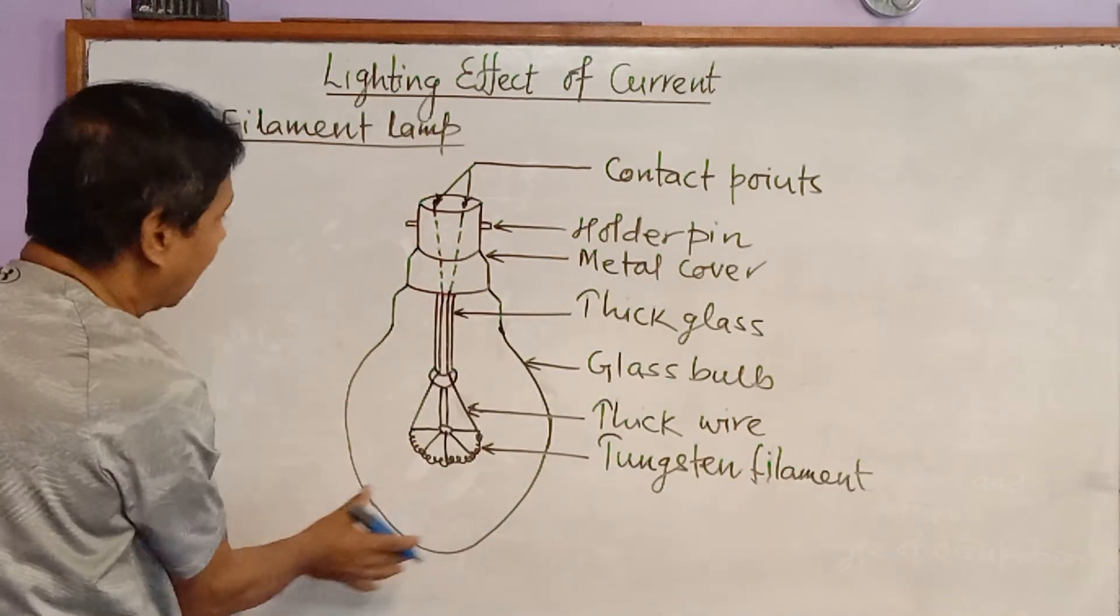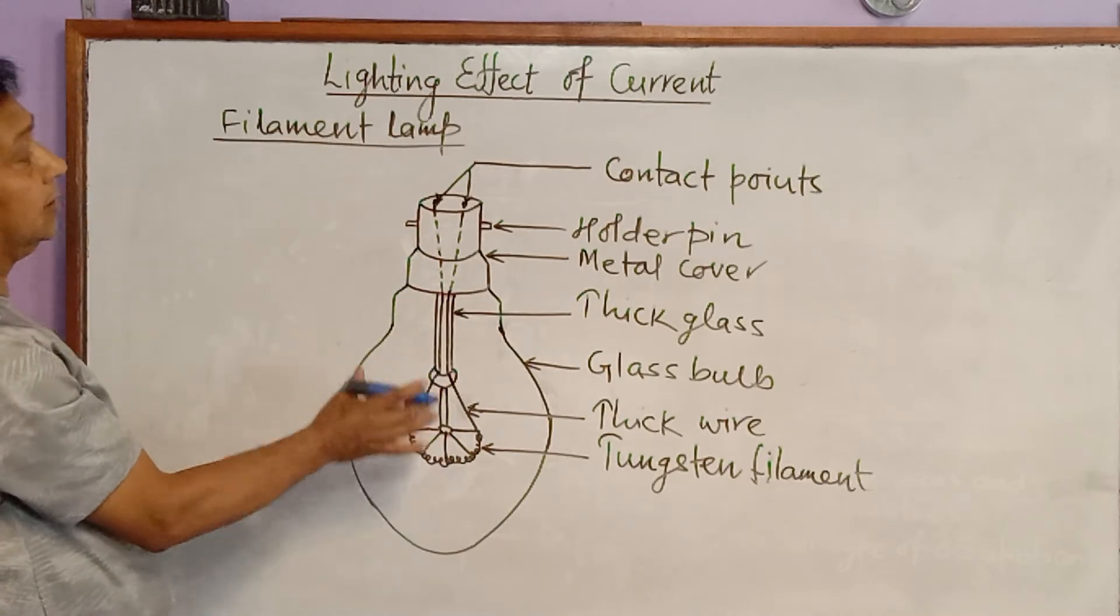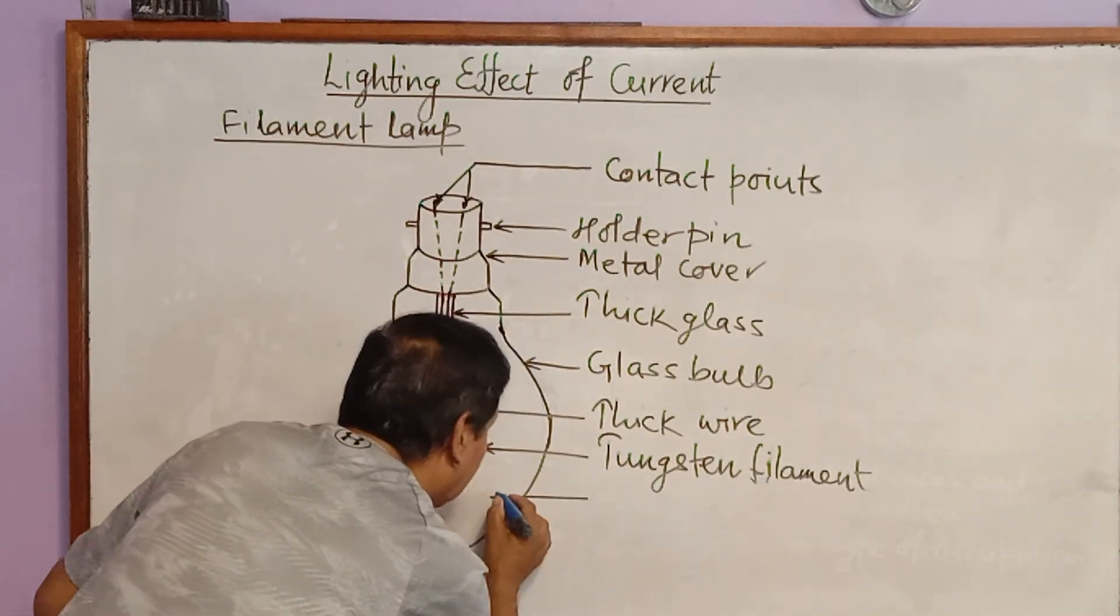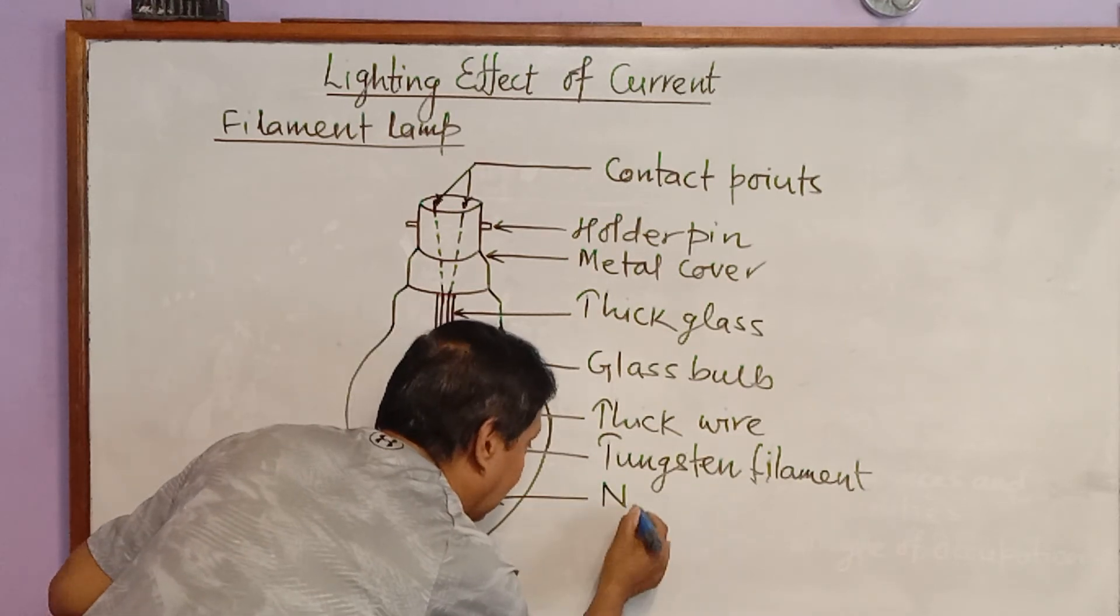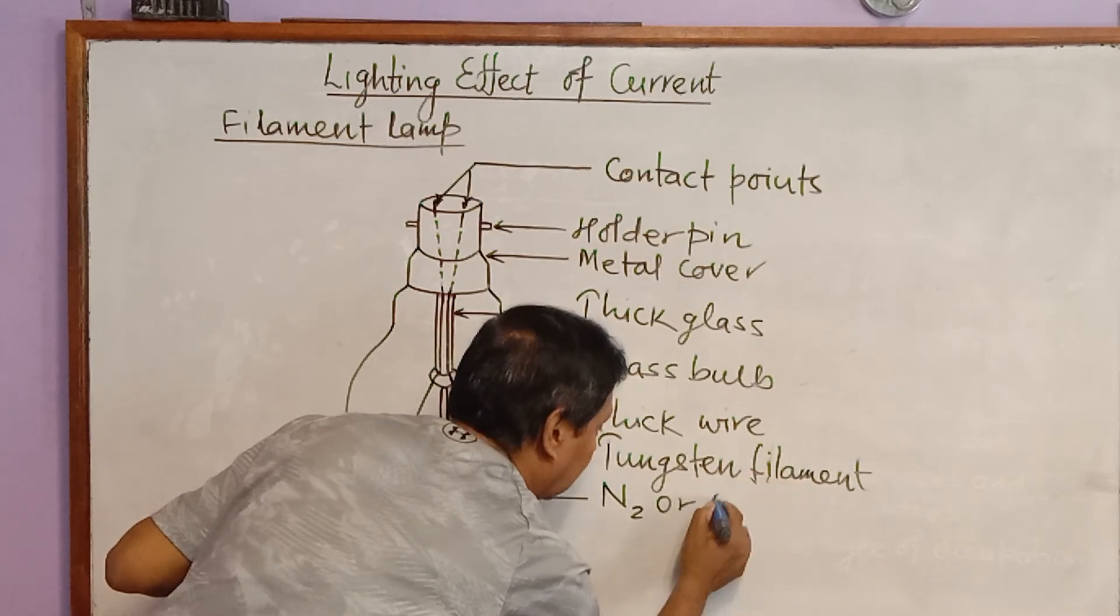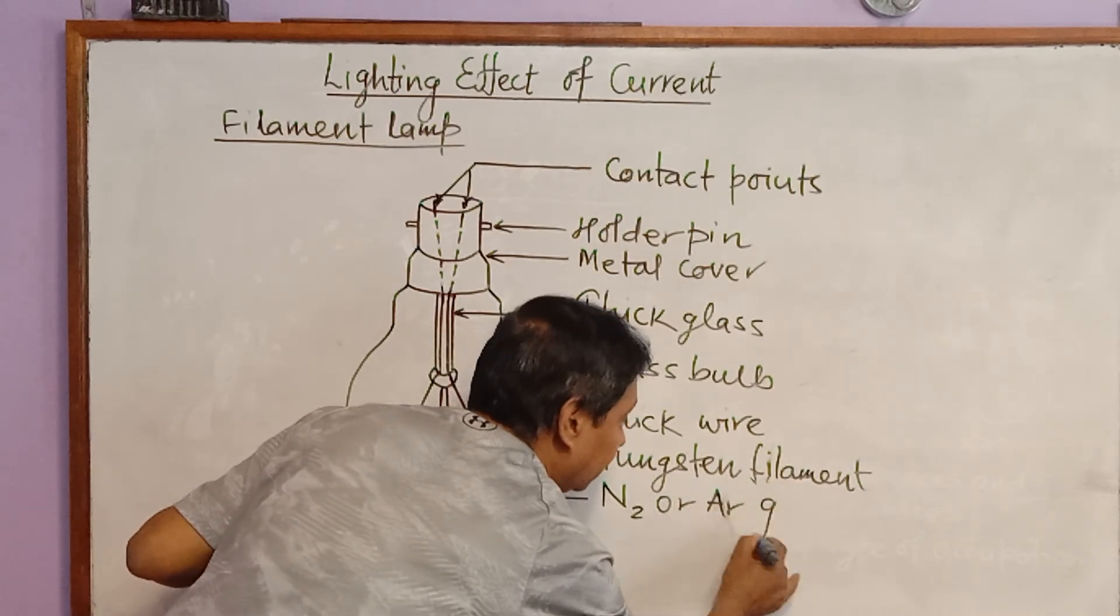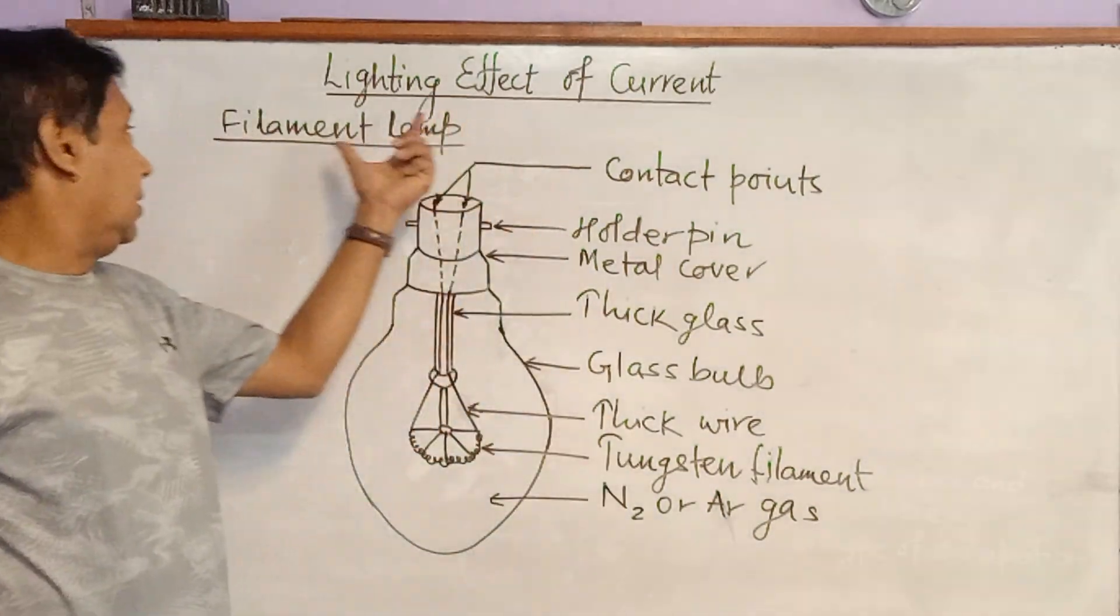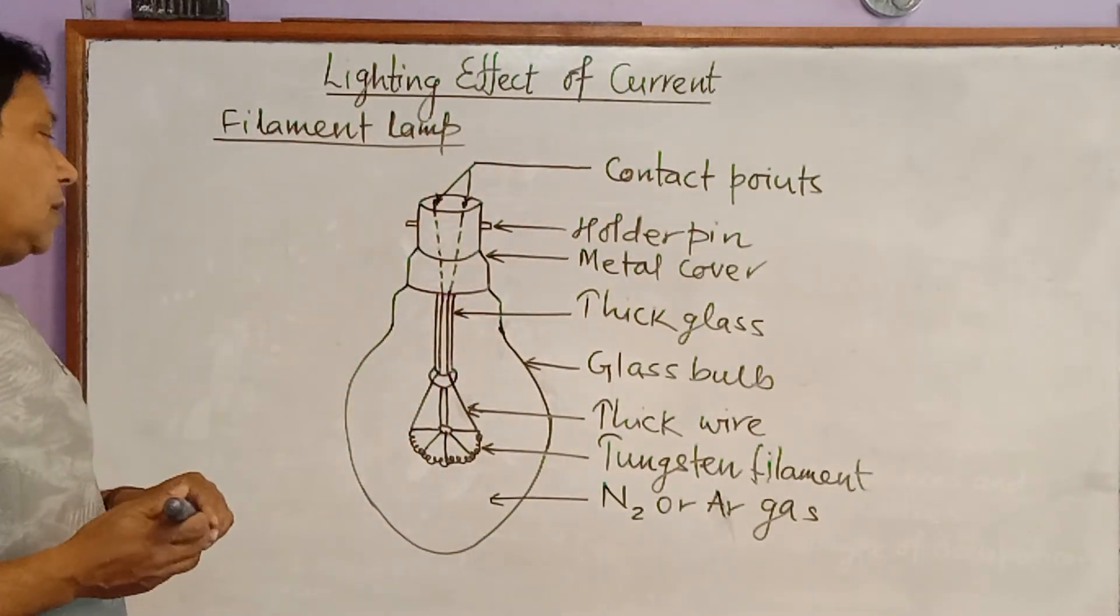And the glass bulb is filled with certain gas. I'm going to show this gas also here in labeling: nitrogen or argon gas. We can write just the symbol only. Yes, this is the design of filament lamp.